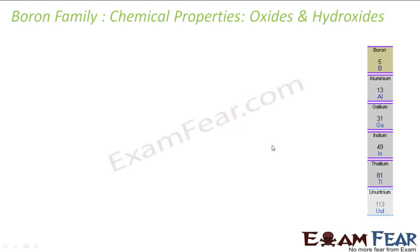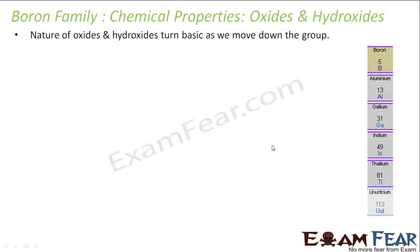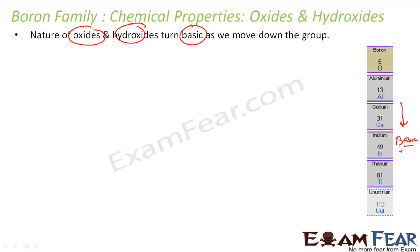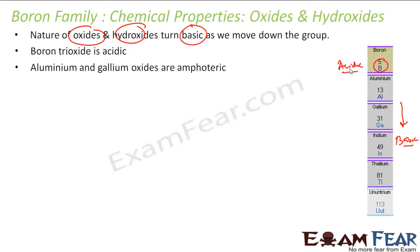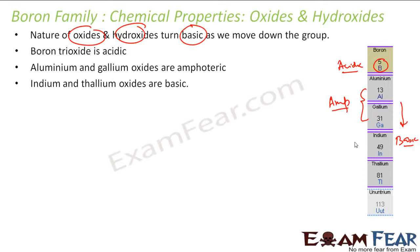Let's talk about oxides and hydroxides. The nature of oxides and hydroxides turns more basic as we go down the group. Boron trioxide is acidic, aluminium and gallium oxides are amphoteric, and indium and thallium oxides are basic. This proves that as you go down the group, the oxides become more basic.